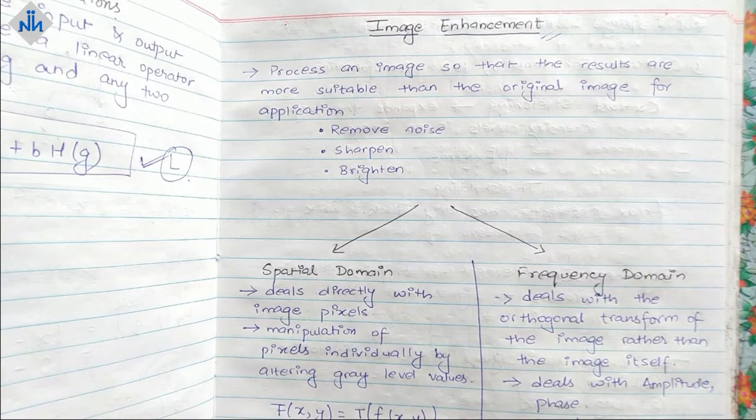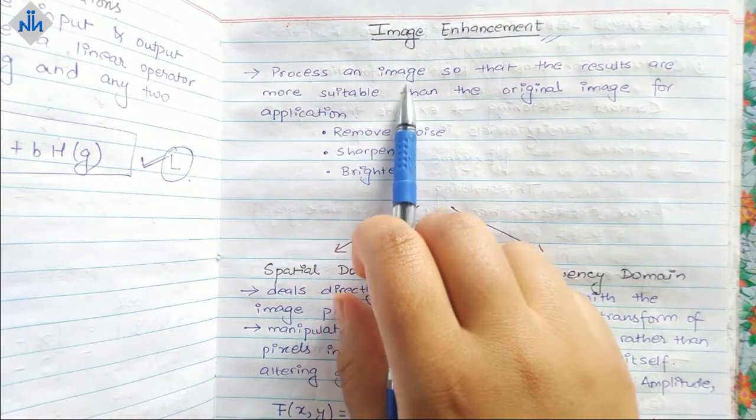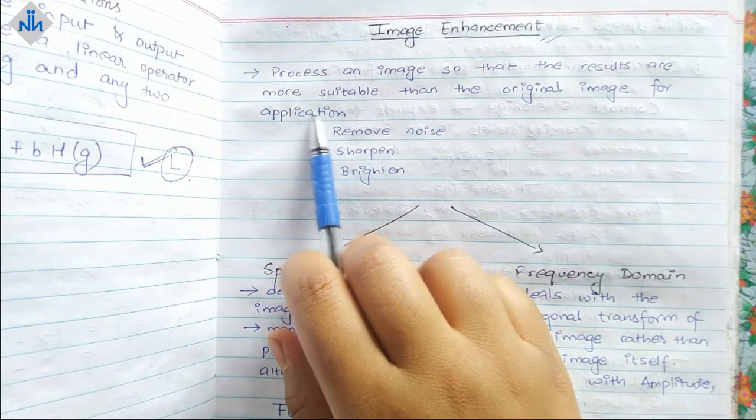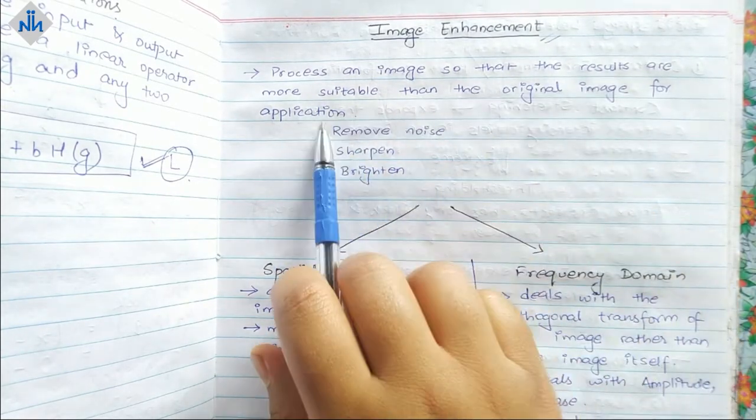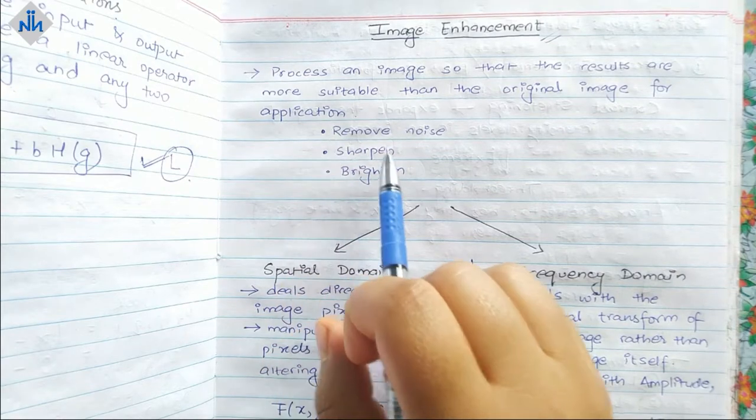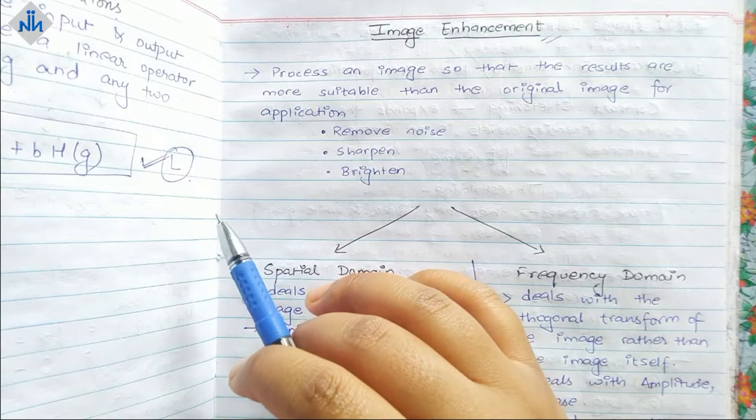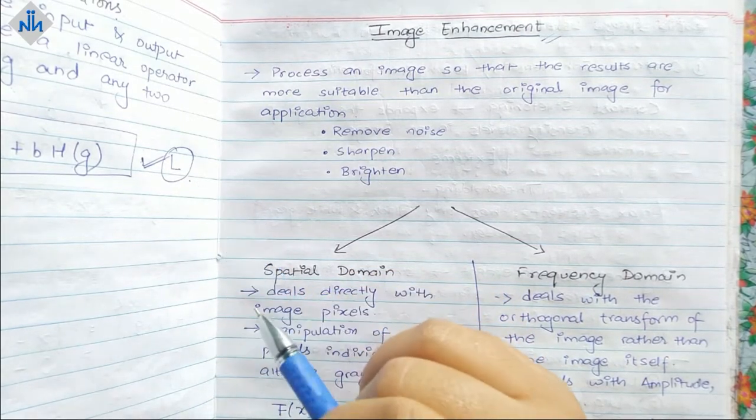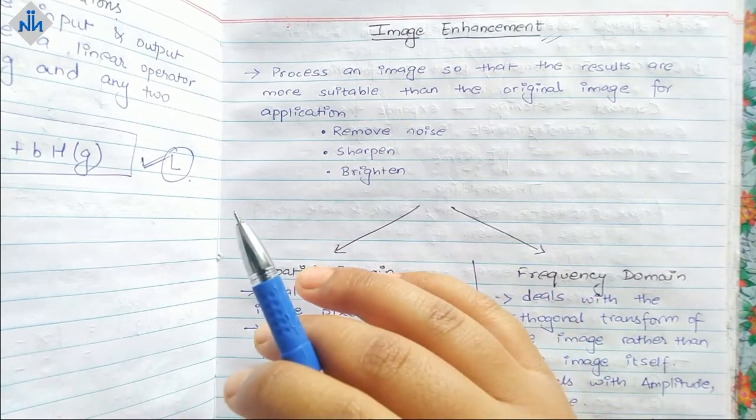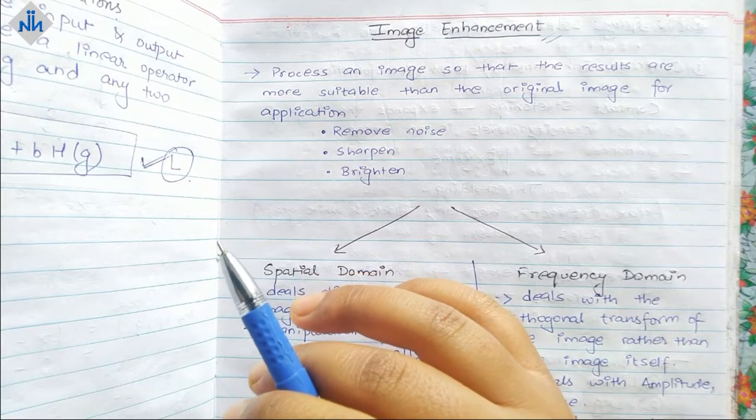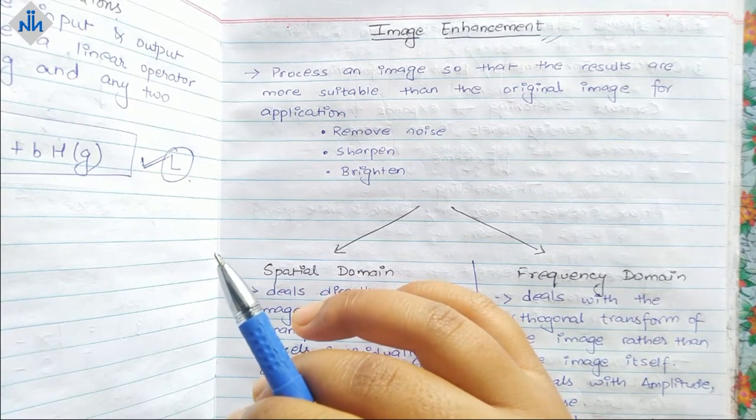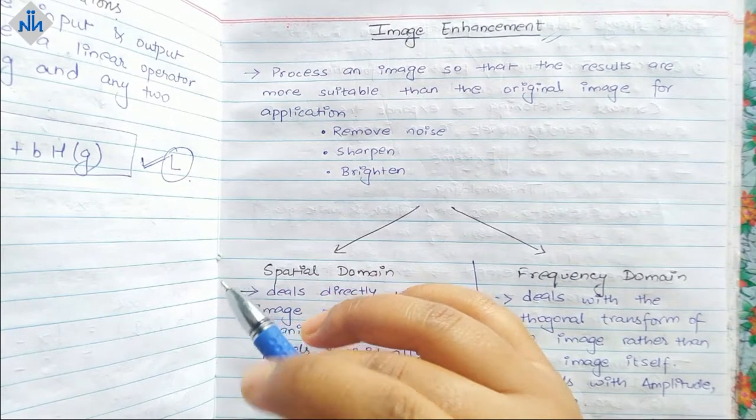What is image enhancement? Process an image so that the results are more suitable than the original image for application. Suppose you have an image and you want to find out some information from it. If it is not good enough, if it is blurred or if it is too bright or too dark, then you cannot really find out any information from it. So you have to do some image enhancement so that the image looks better and you can analyze it better.